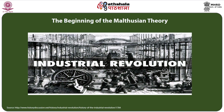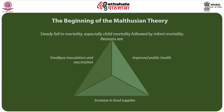Let us discuss the beginning of Malthusian theory and how it has been presented. Since the middle of the 18th century, population has been experiencing socio-economic and political changes because of the industrial revolution. One of them is a steady fall in mortality, especially child mortality, followed by infant mortality. The reasons for the decline in mortality include improved public health, increase in food supplies owing to agricultural innovation, and smallpox inoculation and vaccination.